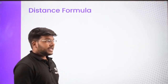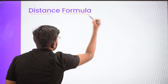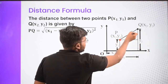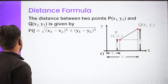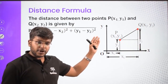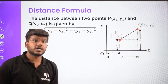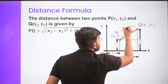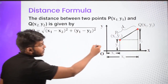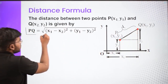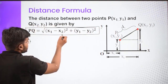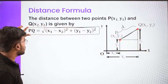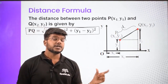Now let's talk about the distance formula. If in a coordinate plane you have two points P and Q having coordinates x1 y1 and x2 y2, and we need to find the distance between these two points, then the distance PQ equals the square root of (x2 minus x1) squared plus (y1 minus y2) squared. This formula is called the distance formula for finding the distance between two given points.